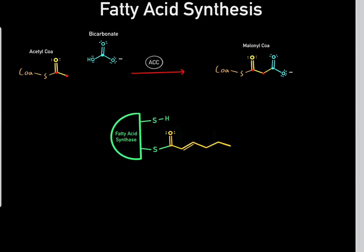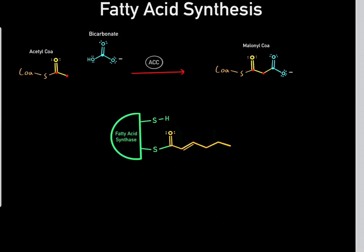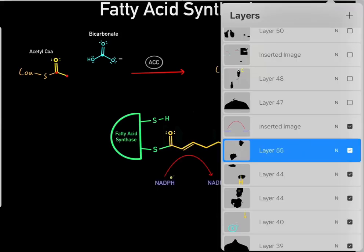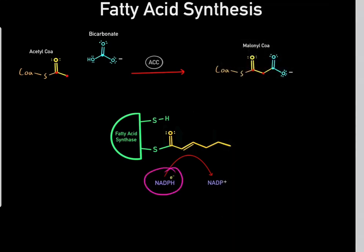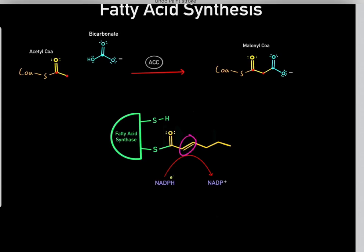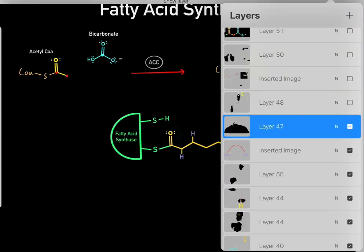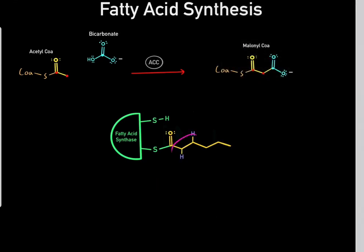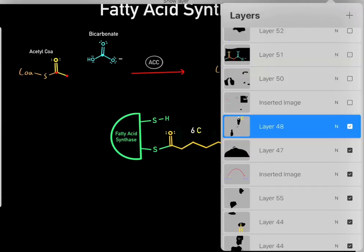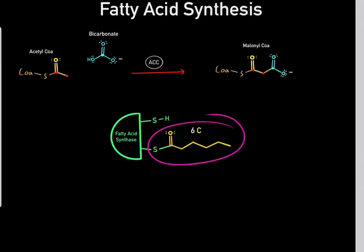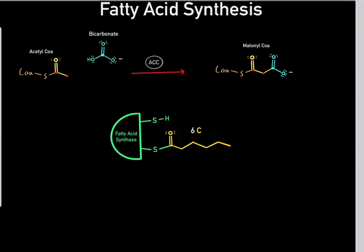This almost resembles a fatty acid, so the last step is to reduce the double bond. Another NADPH comes along and donates electrons and hydrogens to reduce the double bond, saturating it. Now we're left with a structure that resembles a fatty acid — a six-carbon long fatty acid. We've essentially elongated the fatty acid and are now ready to add more carbons.